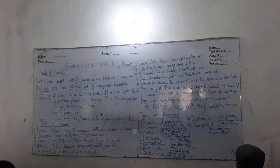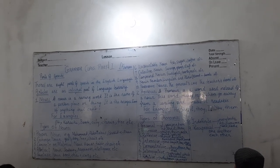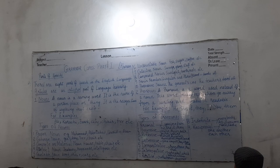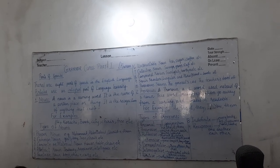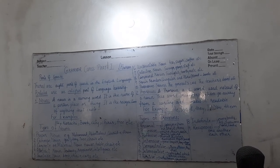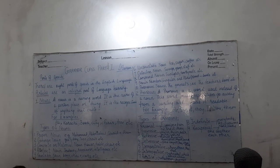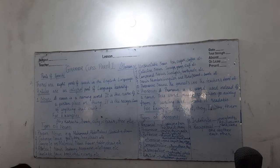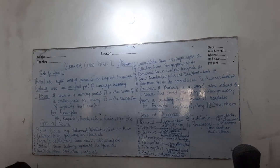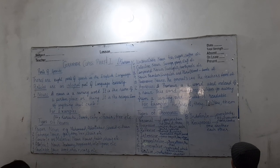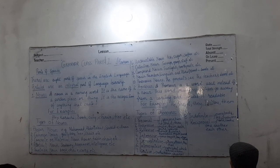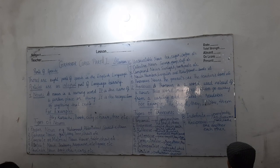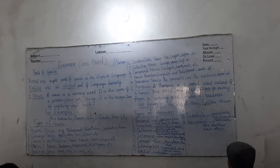Articles are an integral part of language learning. Now, as you can see on the board, I have described today only two of the parts of speech. The first and foremost one, which is most important, is noun. A noun is a naming word — it is the name of a person, place, or thing. It is the recognition of anything that exists.